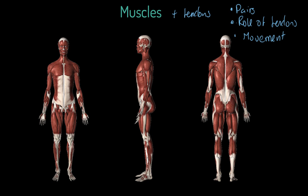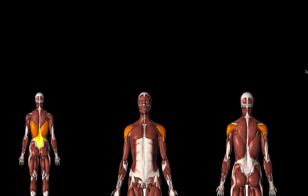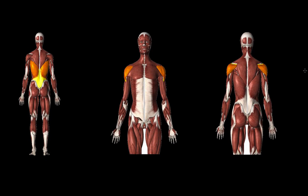Typically in a lesson like this, I'd show you an image of the whole muscular system and then we'd analyse it. What I want to do instead is section the body up and look at individual muscle groups. Naming these things really isn't our target today — we do need to know these names, of course, but more than that, I want you to understand what they do and the role they play.